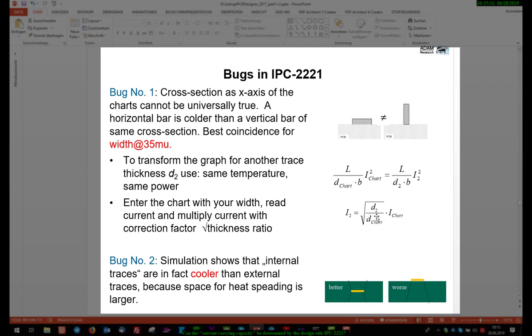The second bug I already mentioned is the mis-concept of internal traces. An internal trace is cooling better than an external trace because of this extra little bit of area, heated area, on the surfaces. And by this it gets a little bit cooler.